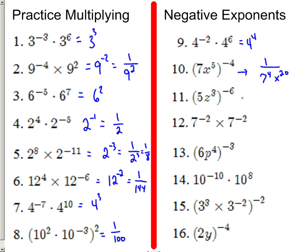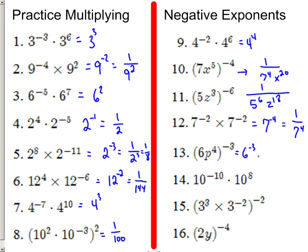Number 11: 5 to the negative sixth, z to the negative eighteenth. To make these into a positive exponent, we've got to move it below. Put a 1 up here for a placeholder. Here, it is 7 to the negative fourth, and that equals 1 over 7 to the fourth. Here, we have 6 to the negative third times p to the negative twelfth, so put a 1 over them and make them positive. Here, we get 10 to the negative second, which is the same as 1 over 10 squared, or 1 one-hundredth.